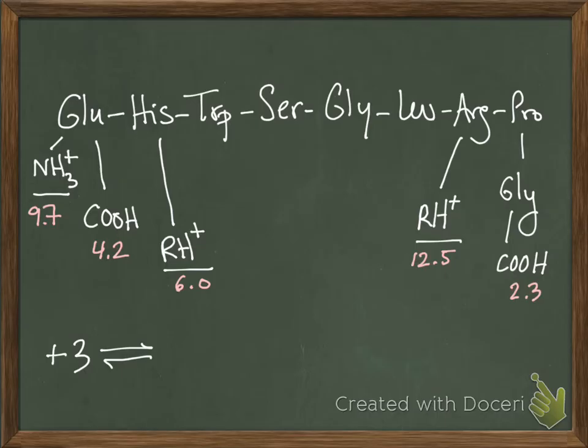So as you raise the pH, the first pKa that you'll reach and then exceed is 2.3. And when this group deprotonates, your overall charge will now be plus 2.